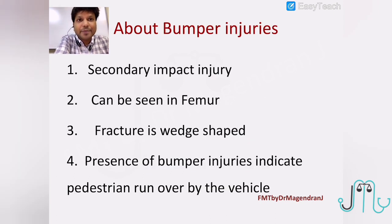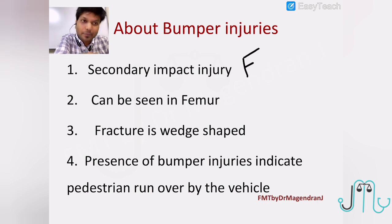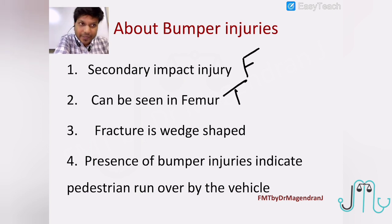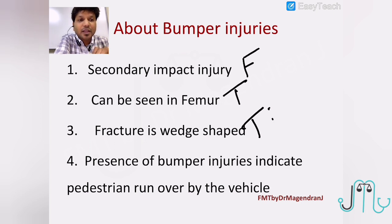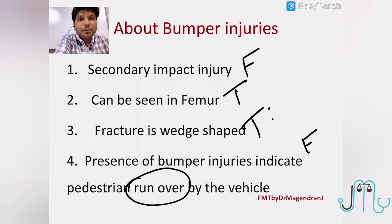About bumper injuries — secondary impact injury: no, bumper injury is not a secondary impact injury; it should be primary impact injury. Can it be seen in the femur? Yes — bumper injuries are commonly seen with tibia, but they can be seen with the femur as well, depending on the height of the victim and the height of the vehicle. Fracture-bed shape — yes, that's true. Presence of bumper injuries indicates the pedestrian was run over by the vehicle — no, it should be the pedestrian hit by the vehicle, not run over. So this option is also false.